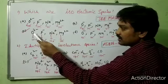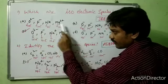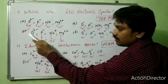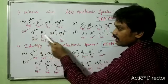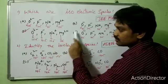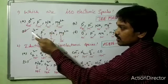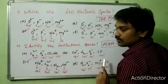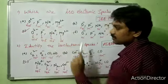All species in option C have the same number of electrons — 10 electrons. So option C is an isoelectronic species and is the correct option.